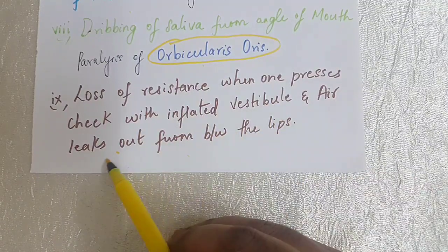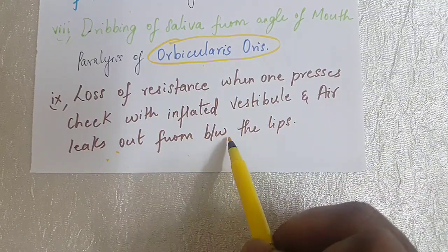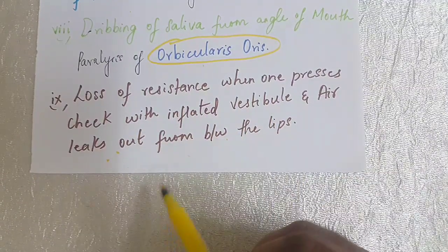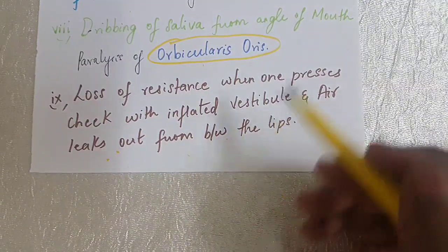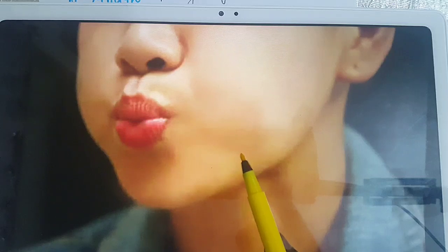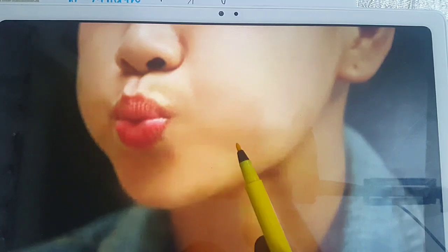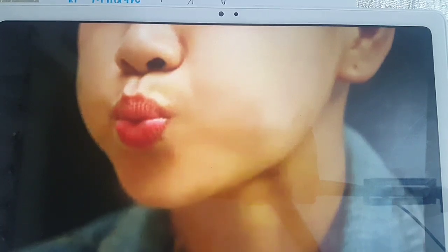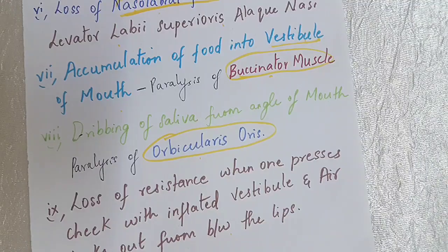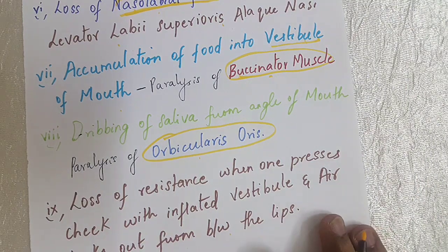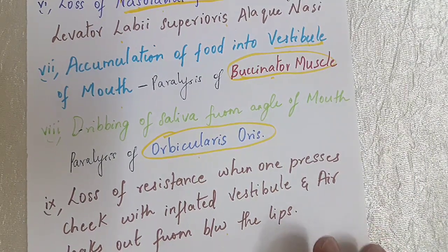The last point is loss of resistance when one presses the cheek with the vestibule inflated, and air leaks out from between the lips. When the vestibule is inflated with air, the person will not be able to resist this air because of paralysis of the buccinator muscle. These were the basic features of Bell's palsy. That's all for today — see you in the next video.